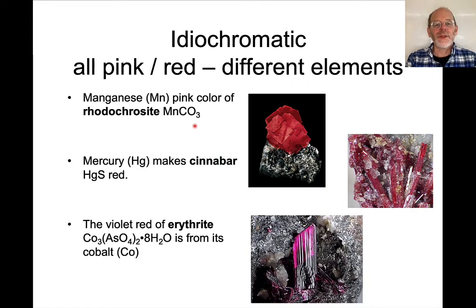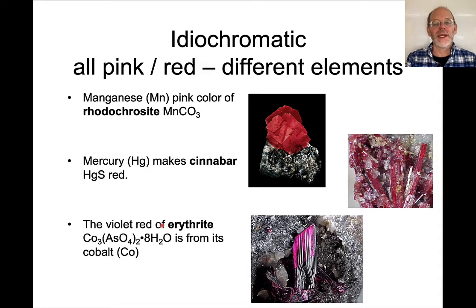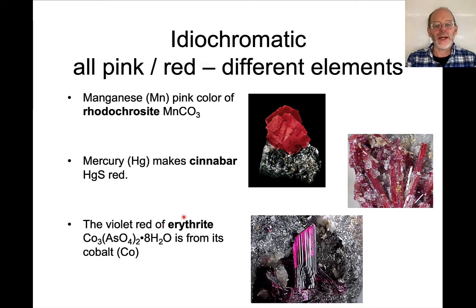Here are some examples of the causes of pink or red colors in minerals: rhodochrosite with manganese, cinnabar with mercury, and erythrite with cobalt. Just as the same element in different crystal structures can cause different colors — azurite versus malachite — different elements in different crystal structures can sometimes create very similar colors, as with rhodochrosite, cinnabar, and erythrite.